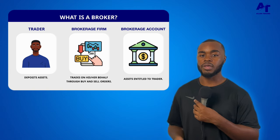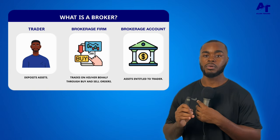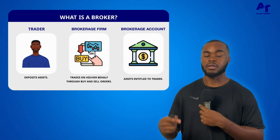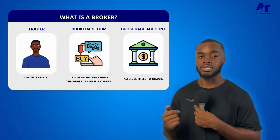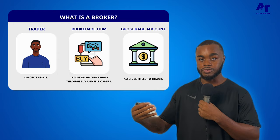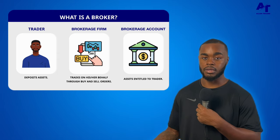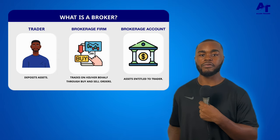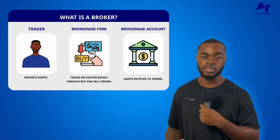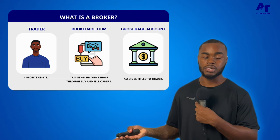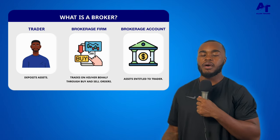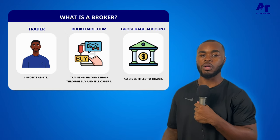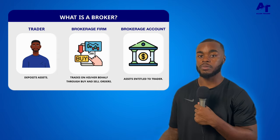Most brokers probably have some type of algorithm to identify traders that are actually successful, and then they A-list them — meaning they copy their trades instead of taking the opposite side. We'll never have proof this happens, but it's the only way for markets to run efficiently and for brokers to stay in business. They have to either B-list traders — take the opposite side — or A-list the good traders, otherwise they'd have to scramble to find a counterparty with the same amount for every trade.